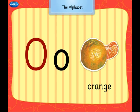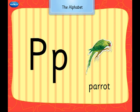O says O, O, Orange. P says P, P, Parrot.